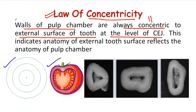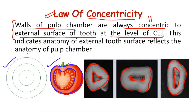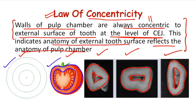The walls of the pulp chamber are always concentric to the external surface of the tooth, meaning they are almost parallel to the external tooth surface. In this image, we can see that this is the outer surface of the tooth, and the walls of the pulp chamber are concentric to it. The floor of the pulp chamber lies at the level of CEJ. From this, we can say that the anatomy of the external tooth surface reflects the anatomy of the pulp chamber.